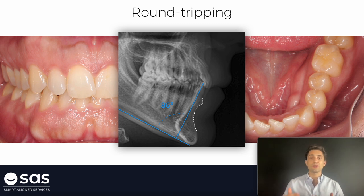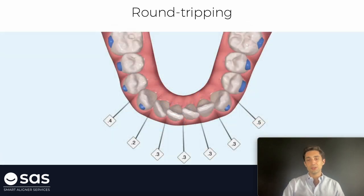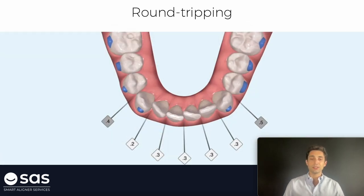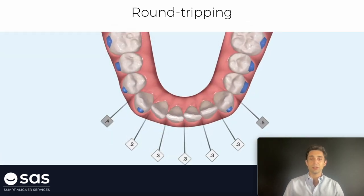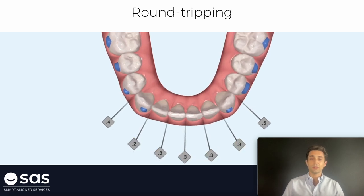This is the virtual planning. Here we are doing this round tripping with distal out of 42, mesial out of 31, and all those hinge movements that are going to increase the predictability of the rotations.